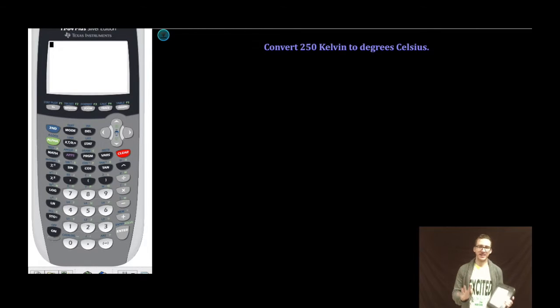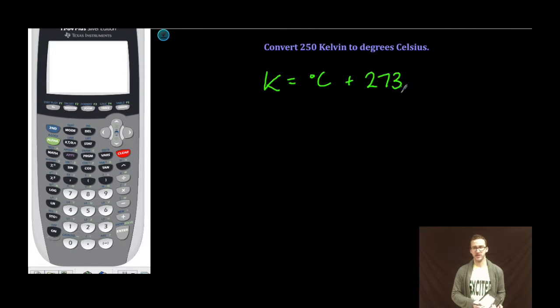Hey, what's up everybody? Let's do some quick temperature conversions. Pretty straightforward, pretty easy peasy. All we need to remember is this formula: our temperature in Kelvin is equal to our degree Celsius plus 273.